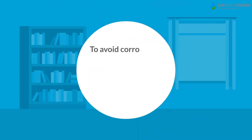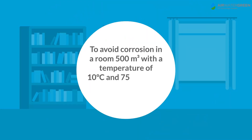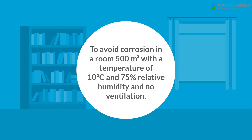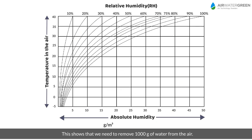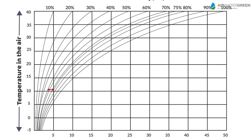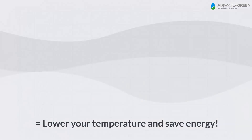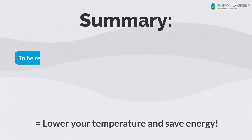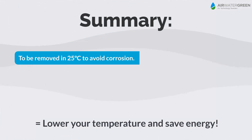How much moisture should be removed if you have a room of 500 cubic meters with a temperature of 10 degrees Celsius, 75% relative humidity, and no ventilation? This shows that we need to remove 1000 grams of water from the air.